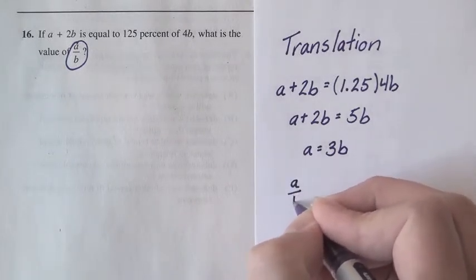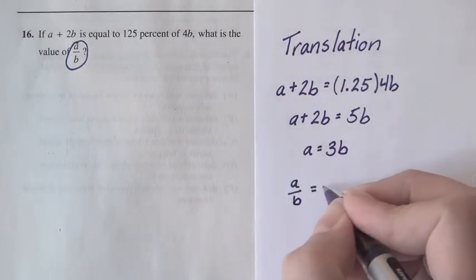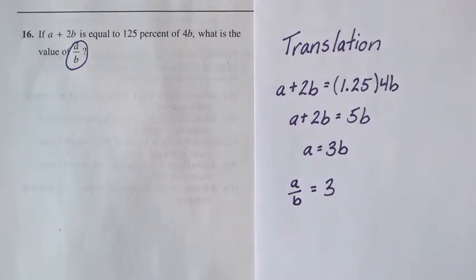So we'll get a over b is equal to 3. And that's how you do it. Please continue to check out more Mindfish videos.